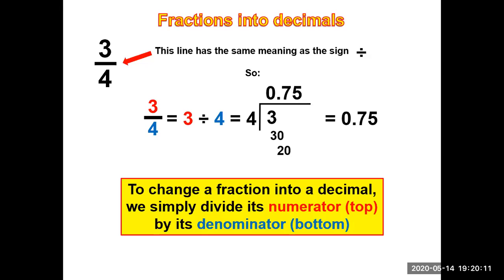To change a fraction into a decimal, we simply divide its numerator, which is the top, by its denominator, the bottom. So four goes into three - it's not possible, so you have your zero on the top and you bring down zero to have 30. Four divided into 30, you have your seven. Four multiplied by seven is 28. You subtract and you have two left.